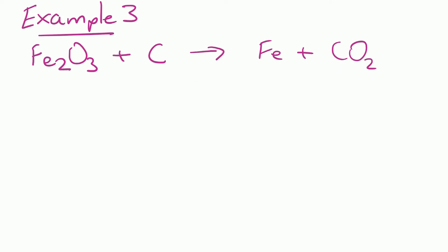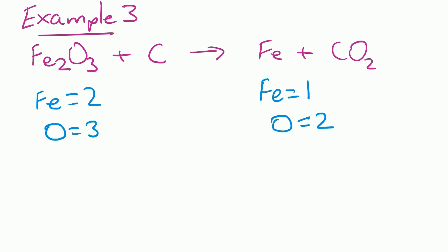Let's look at a final example. We've got two Fes on the left, one Fe on the right, three Os on the left, two Os on the right, one C on the left, one C on the right. We've got three Os on the left and two on the right — the magic number is six, the lowest common denominator. So we'll make it so we've got six Os on each side. We times Fe2O3 by two, giving us six Os on the left, then multiply CO2 by three to give us six Os on the right.